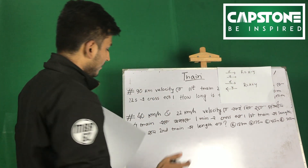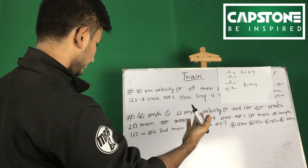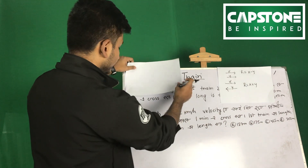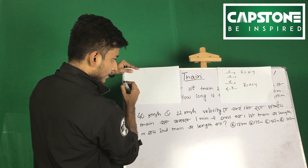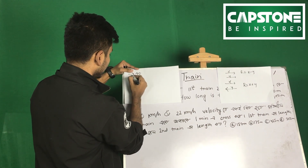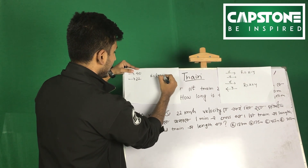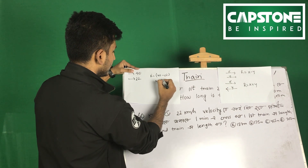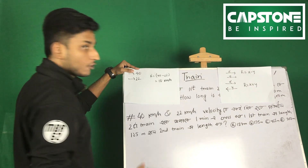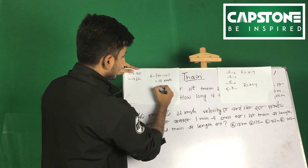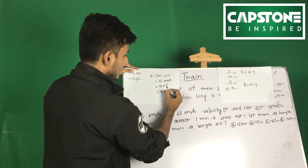We will find the relative velocity. The second train is at 22 km/h and the first is at 40 km/h. So the relative velocity is 40 minus 22, which equals 18 km per hour. Converting to meters per second: 18 into 5 by 18 equals 5 meters per second.